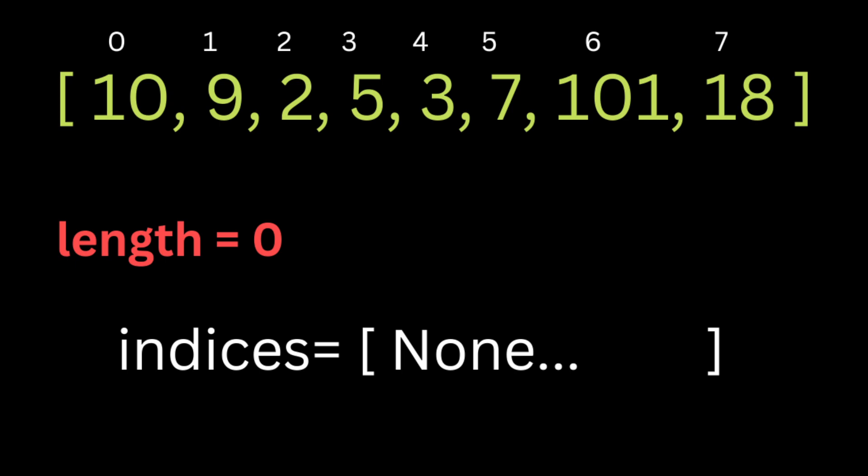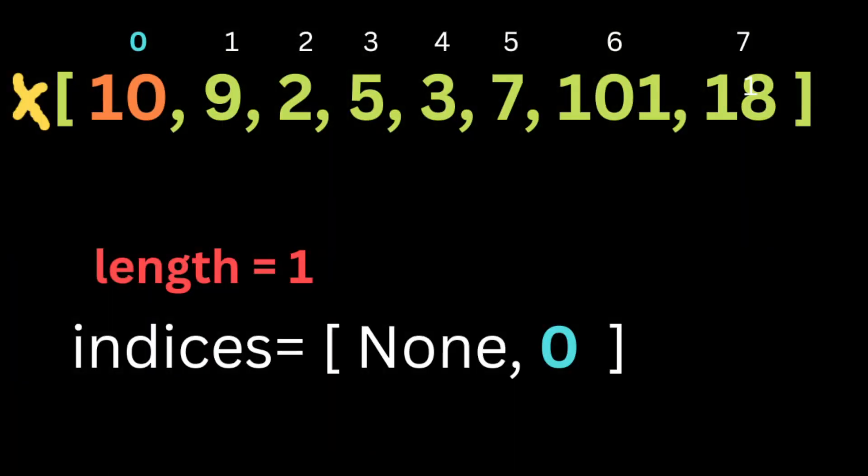We start iterating over the array applying binary search. Binary search is a half-interval search — we have a starting index and an end index, look at the middle, and compare the middle value to the current number. If it's smaller we search to the right; if it's bigger we move to the left, continuing until the start index is bigger than the end. Starting at number 10 at index zero, indices at index one — representing a longest increasing subsequence of length one — stores index zero, meaning the number 10.